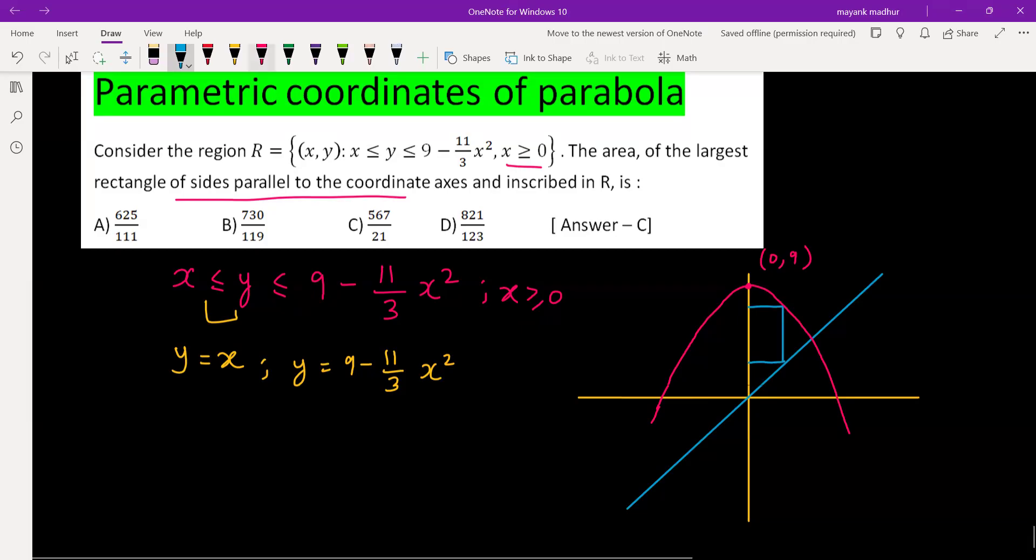So basically we need to consider the parametric coordinates on the parabola and the straight line. So any point on this straight line y equal to x will be of the form t comma t, both coordinates will be same. And since this line is parallel to the y axis, any point on this line will have same x coordinate. So we will be considering x is t, and when we put x equal to t we get the parametric coordinate of the parabola which is 9 minus 11 by 3 t square.